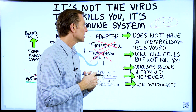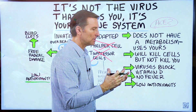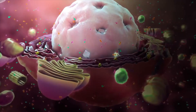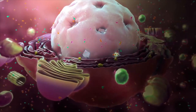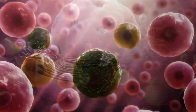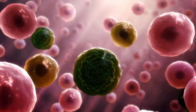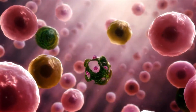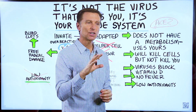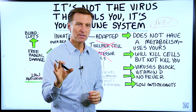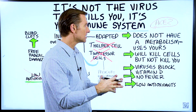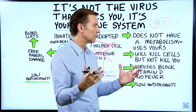The virus's goal is to get into the cell as fast as possible and start to replicate. It hijacks your copy machine — your cellular machinery, your metabolism — to replicate. That's actually creating a lot of damage, and then it creates an immune reaction.